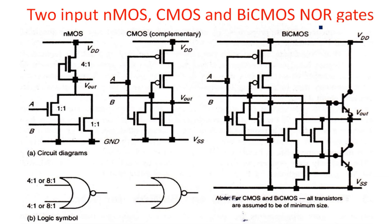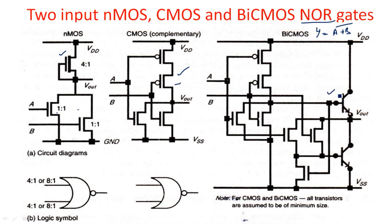NOR gate realization: Y equals (A+B) bar. By De Morgan's theorem, A+B bar equals A·B, meaning PMOS transistors should be in series — opposite to the NAND gate realization. In NMOS logic, the depletion mode transistor is in the pull-up and A and B are in parallel for the pull-down. The same CMOS logic is then extended with bipolar technology to get the BiCMOS NOR realization.